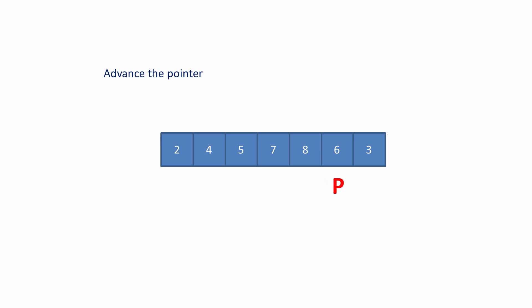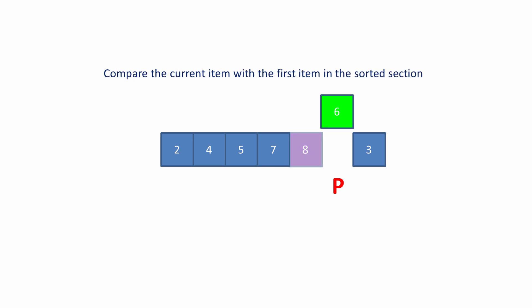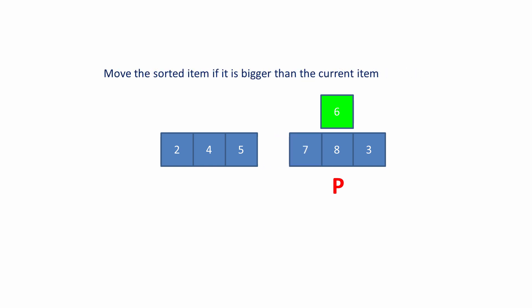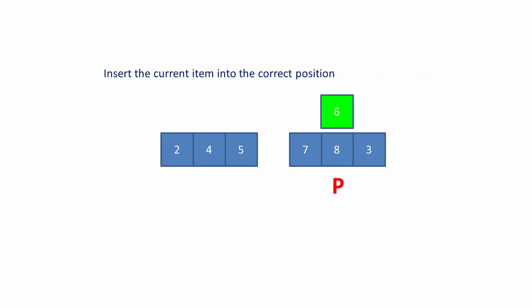Again, advance the pointer. Select a new current item — that's the first item in the unsorted section. Compare the current item with the first item in the sorted section. Move the sorted item. Compare the current item with the next item and move the sorted item. Compare the current item again with the next item in the sorted section, but this time the 5 doesn't need to move, so insert the current item into the correct position.